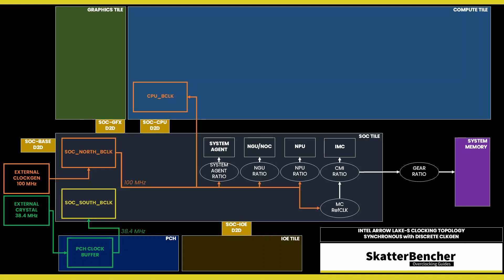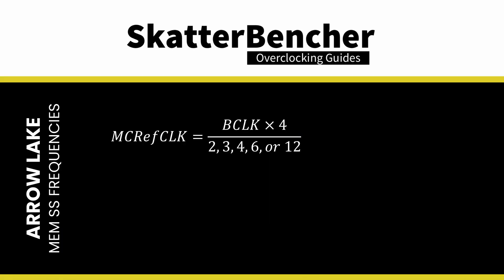This clock affects all IP blocks except those in the compute tile and the PCI DMI links. This PLL can also be linked to the CPU PLL when you run it in synchronous mode, or it can work independently in asynchronous mode. This 100 MHz reference clock is then multiplied by 4 and divided by 2, 3, 4, 6.